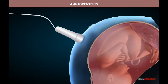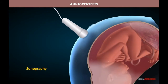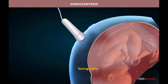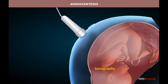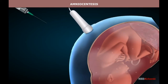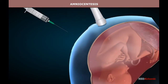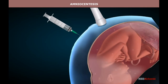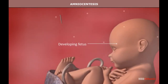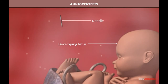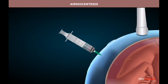The procedure begins with locating the fetus using a technique called sonography. To prevent accidental damage to the fetus, a fine hollow needle is passed through the abdominal and uterine wall of a pregnant female into the amniotic cavity, and a small amount of amniotic fluid is withdrawn.